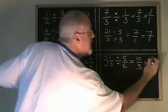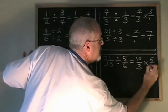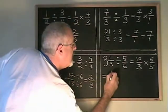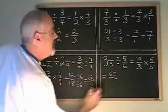5 sixths turns upside down and becomes 6 fifths. 10 times 6 is 60. 3 times 5 is 15.